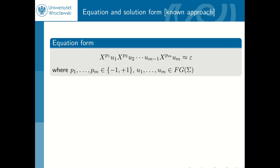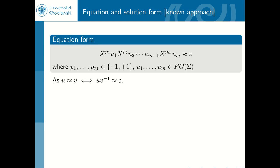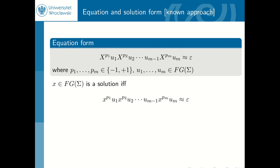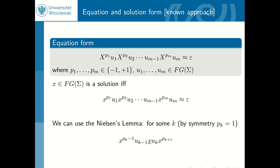If we consider the given equation, we can assume without loss of generality that everything is on the left-hand side and the right-hand side is only epsilon, and that all exponents are either plus or minus one. The reason we can move everything to the left is by multiplying by the inverse of the right-hand side. So if x is a solution, this means that such a concatenation is equal in the free group to epsilon. By Nielsen's lemma, we can show that one of those x's — by symmetry we can assume its power is plus one — cancels within the two neighboring x's, which may be at powers plus one or minus one.